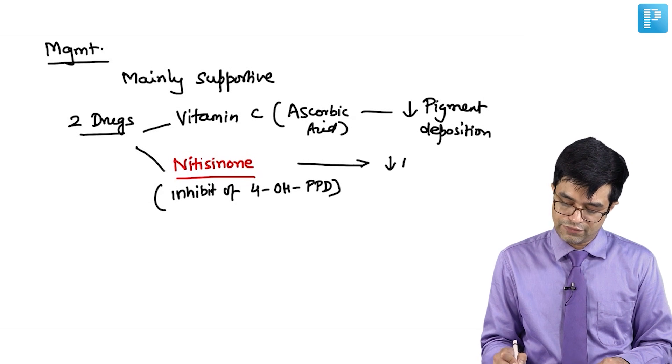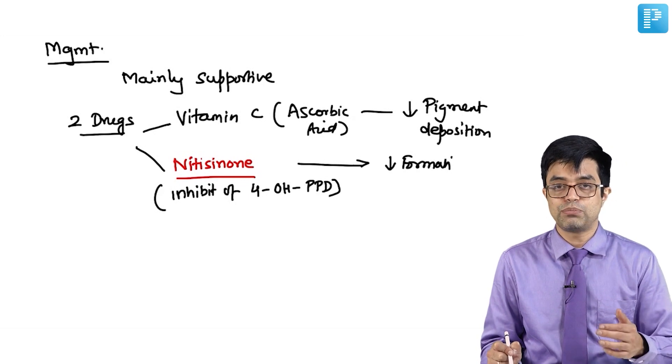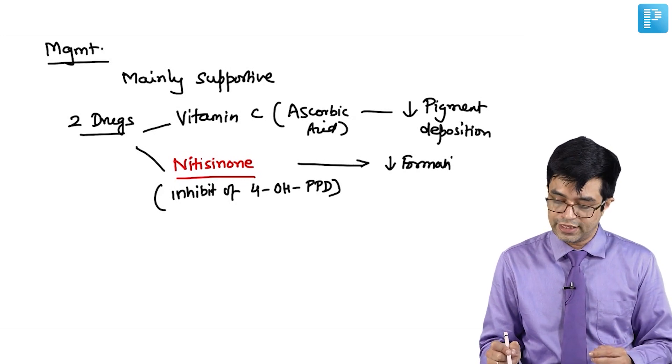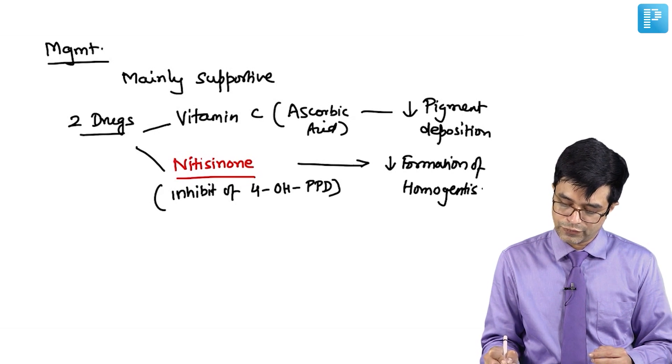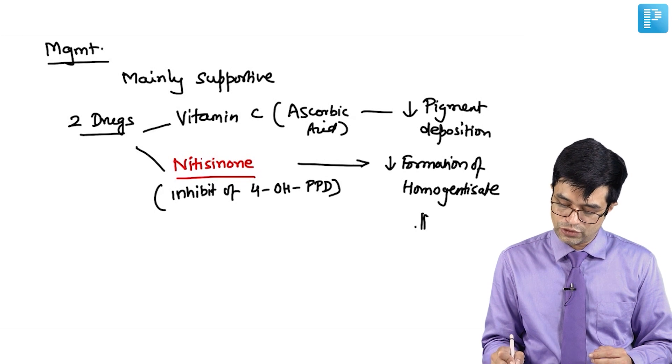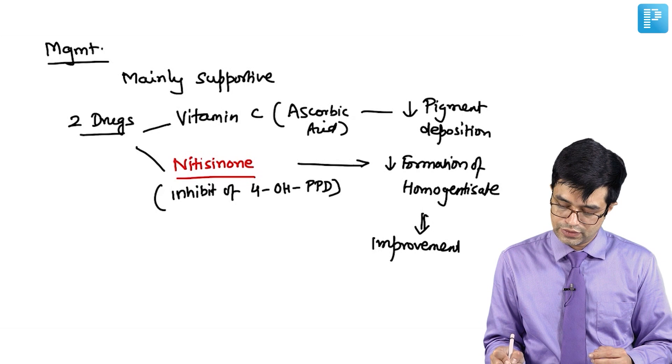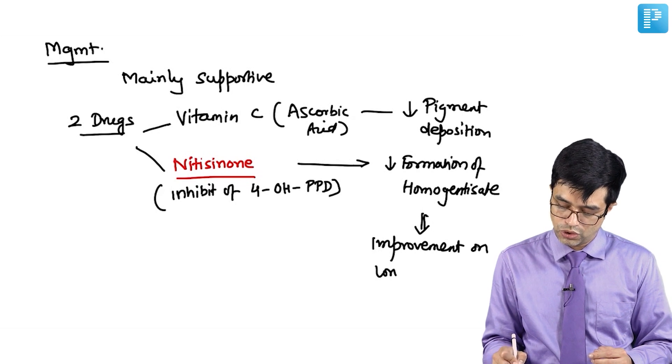4-hydroxyphenylpyruvate dioxygenase is a precursor of homogentisic acid, and so it decreases the formation of homogentisic acid. It produces improvement in patients on long-term therapy.